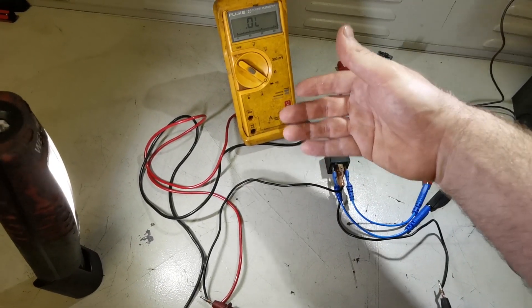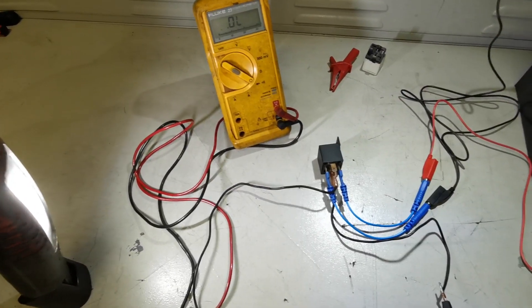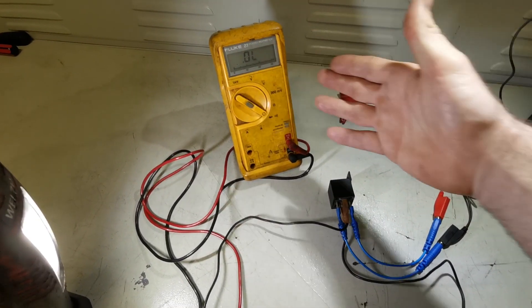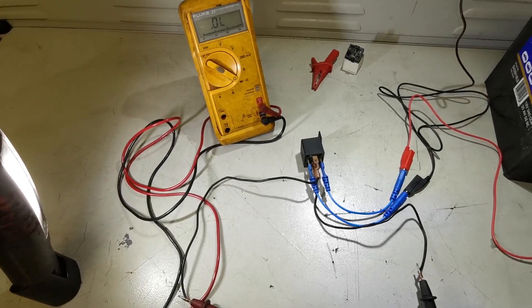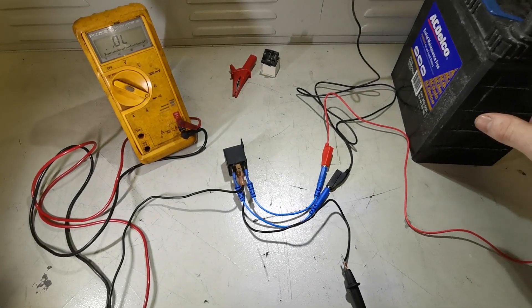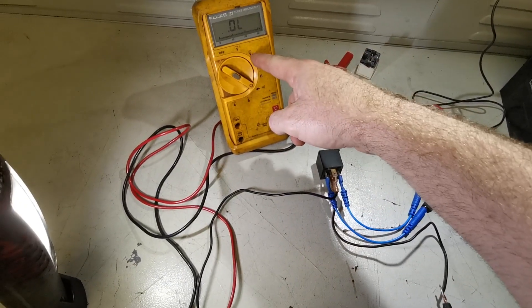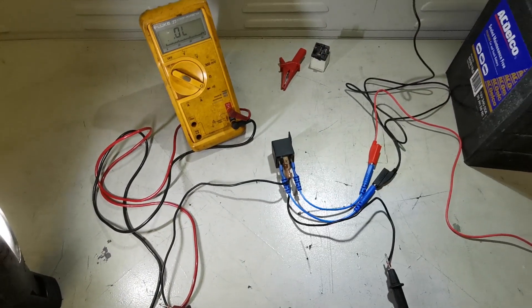So you have it set up to continuity or ohms for the resistance and you're looking for a change in the reading and a clicking sound. When the power gets applied, you get a click on the relay and then you need continuity. You need both of those to happen.